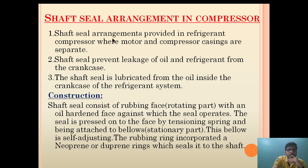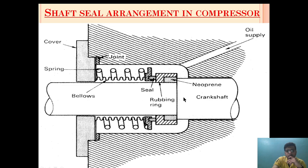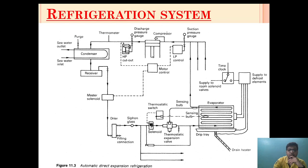The first topic is the soft seal arrangement provided in a refrigerant compressor where the motor and compressor casing are separate. What I mean by that is: suppose this is the crankshaft of a compressor, and if it is driven by a motor on the other end, a sealing arrangement is needed. For that, a soft seal arrangement is provided in the compressor.